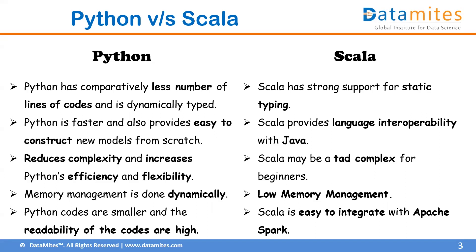Scala has strong support for static typing. For example, in static typing you would write: float b = 3.14 — pre-defining the variable name, its value, and its data type. In Python, you don't need to pre-define the data type — the Python interpreter dynamically assigns it. You simply write b = 3.142 and Python understands it's a floating-point value and assigns the float data type automatically.